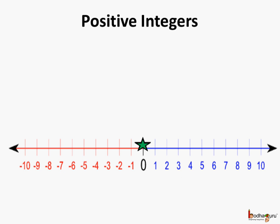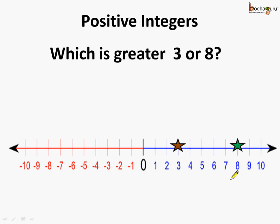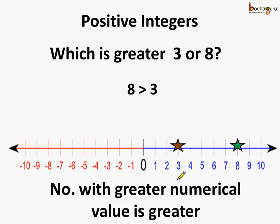Now, if we talk of positive integers, which is greater — 8 or 3? We already know 8 is here and 3 is here, and since 8 lies on the right side of 3, 8 is greater than 3. So in case of positive integers, the rule is simple: the number with greater numerical value is greater.